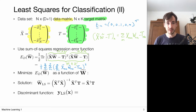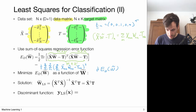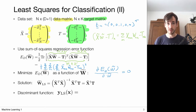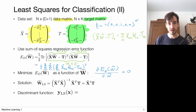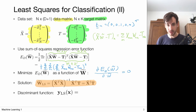Our strategy is to minimize this sum of squared errors as a function of W, following the same recipe as always: take the derivative of this error function with respect to W and set it to zero. We're computing the derivative with respect to a matrix, as we've done before in the covariance matrix case. Setting it to zero and solving gives us the least squares solution for weights W.